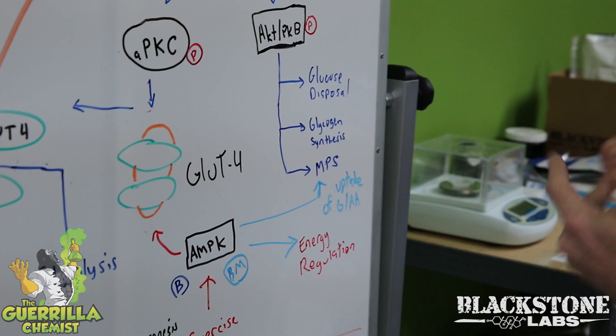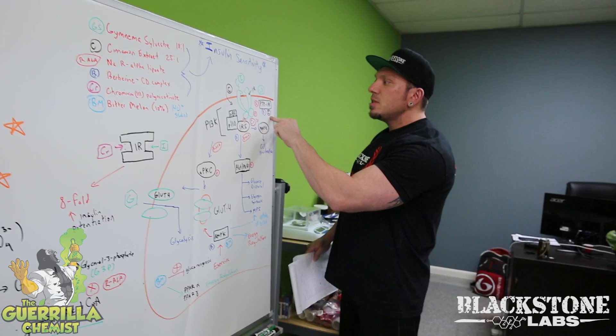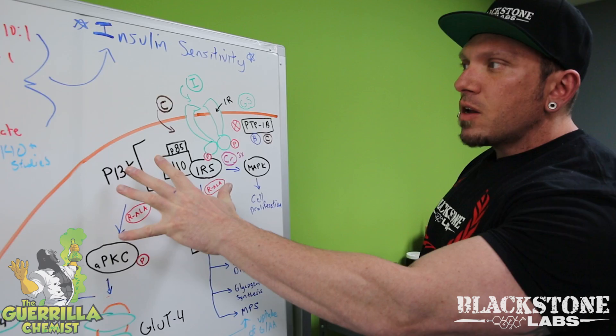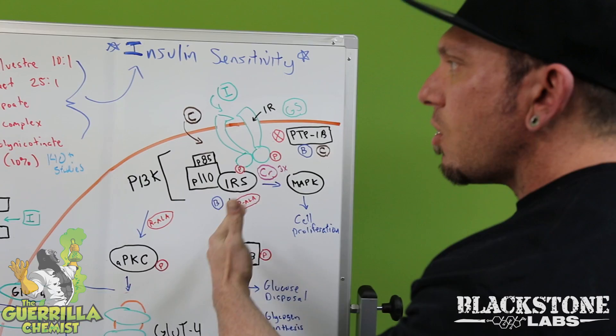Cinnamon also does another key thing: it blocks the PTP1B phosphatase enzyme we spoke about before, which inhibits the signaling cascade. So not only are we secreting insulin and making the pathway active — we're also blocking the enzyme responsible for deactivating the pathway, and this is all without the use of insulin. This is actually really cool.